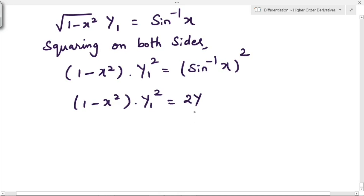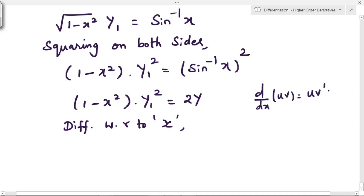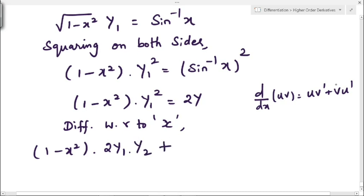Differentiating (1 - x²)·y₁² = 2y with respect to x: the left side is a product u·v, so we apply the product rule u·v' + v·u'. The first term gives (1 - x²)·2y₁·y₂, since differentiating y₁² gives 2y₁·y₂. The second term gives y₁²·(-2x), since differentiating (1 - x²) gives -2x. The right side gives 2y₁.